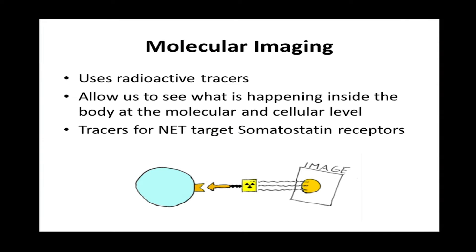Molecular imaging uses radioactive tracers that allow us to see what is happening inside the body and cells at the molecular and cellular level. The tracers available for neuroendocrine tumors target the somatostatin receptors. The somatostatin analog homes in on the receptor, binds to the neuroendocrine tumor cell, and the attached radiation leaves the body and is caught by special SPECT cameras or PET cameras. Software then creates an image I can interpret.